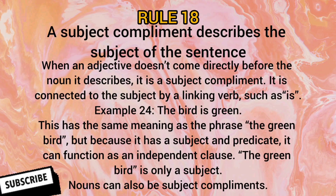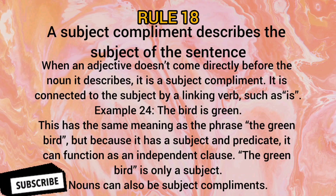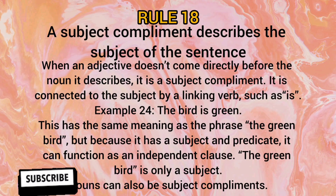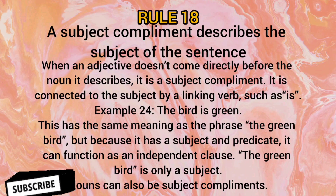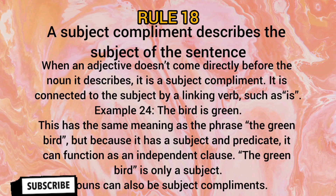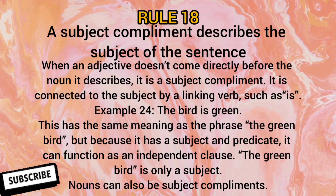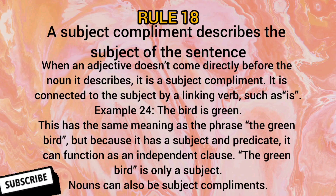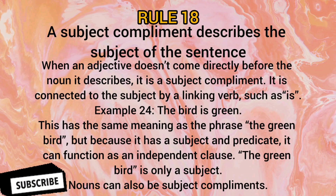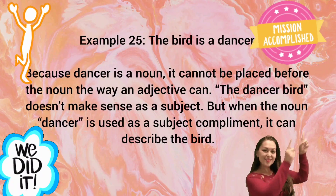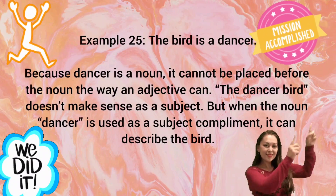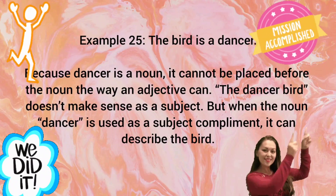Rule number 18: A subject complement describes the subject of the sentence. When an adjective comes directly before a noun and describes it, it is a subject complement connected to the subject by a linking verb like 'is' — for example, 'The bird is green,' which has the same meaning as 'the green bird.' Nouns can also be subject complements — for example, 'The bird is a dancer.' Since 'dancer' is a noun, it cannot be placed before 'bird' the way an adjective can, but when used as a subject complement, it can describe the bird.